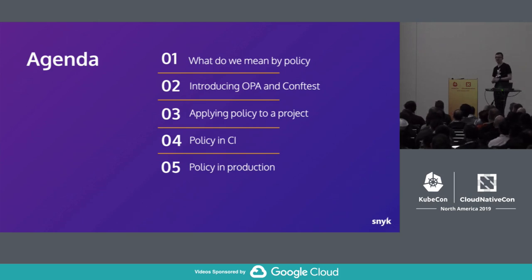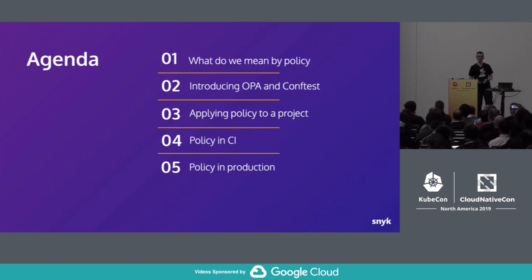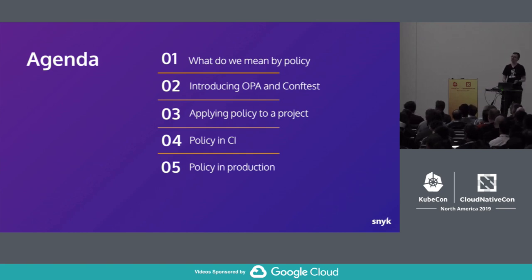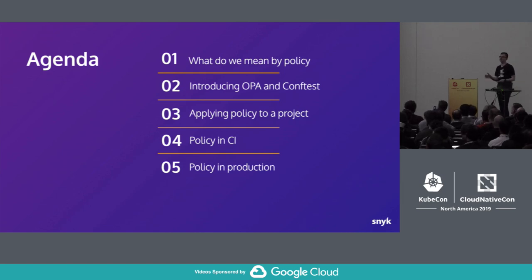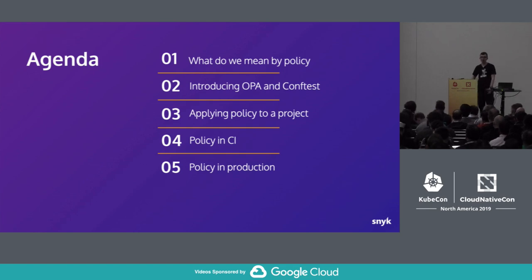I want to take a step back from the overlong title and talk a little bit about what we mean by policy in the context of software development. I want to introduce Open Policy Agent and some tools from that ecosystem, and then really dive into an example of looking at where it's useful and how we can test policy and make policy assertions throughout our pipeline.